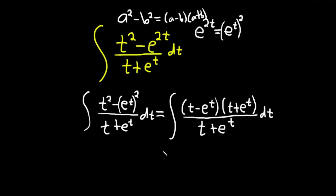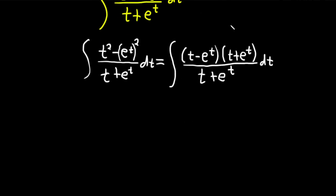And the nice thing about this now is that we have some cancellation. Cancel. So we're left with the integral of parentheses t minus e to the t. And then here we have our dt.